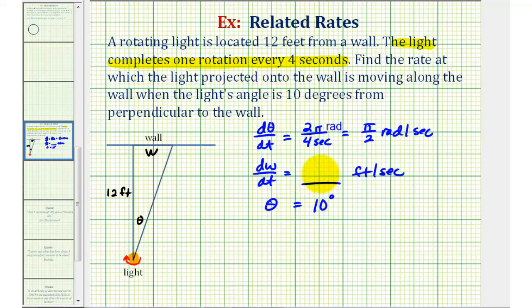Now we need an equation that relates theta to the length of this side and the length of this side of the right triangle. Since w is the opposite side of angle theta and 12 feet is the adjacent side, we can use the tangent function to write our equation. Tangent theta must be equal to w divided by 12.